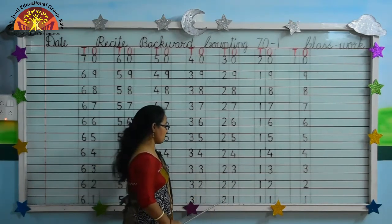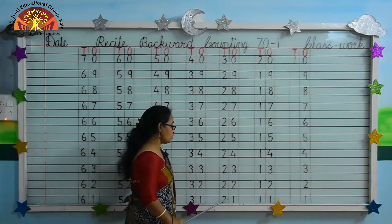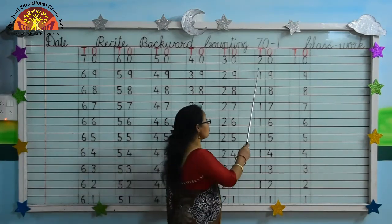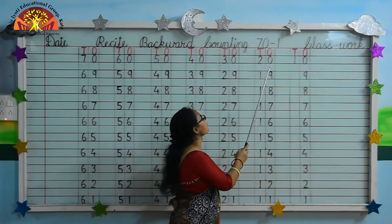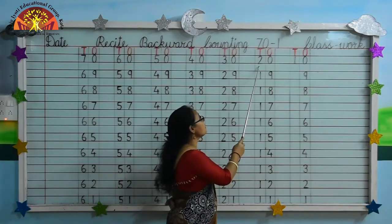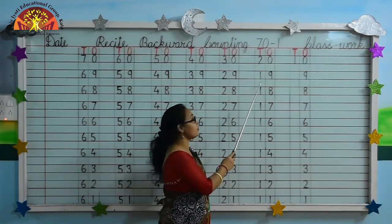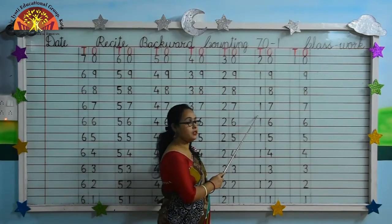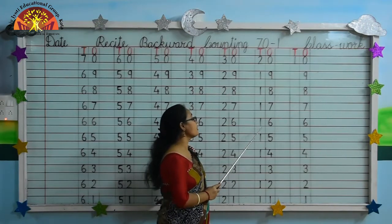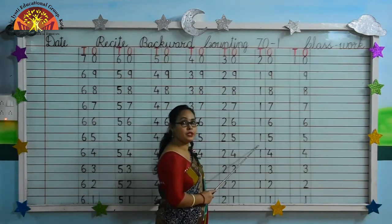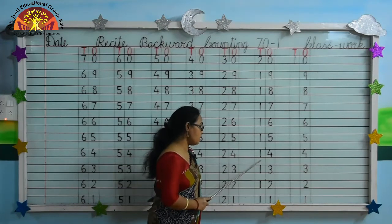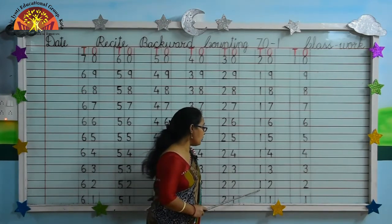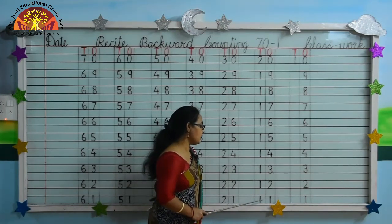Kids, now you tell me what comes before 21. Yes, 20, 19, 18, 17, 16, 15, 14, 13, 12, 11.